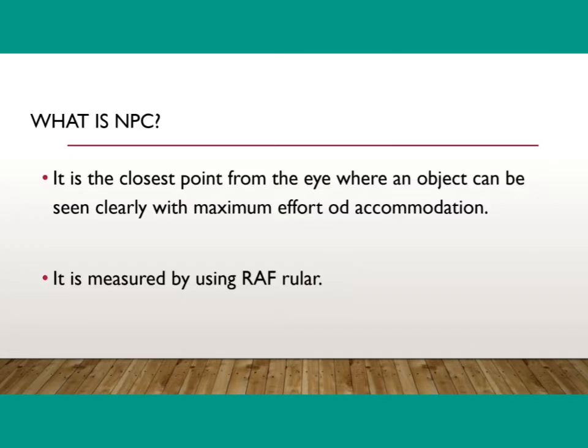So what is NPC? NPC means Near Point of Convergence. It is the closest or nearest point from the eyes where both eyes can see an object clearly with a maximum effort of convergence. That is known as Near Point of Convergence. We can measure the NPC by using the RF ruler.